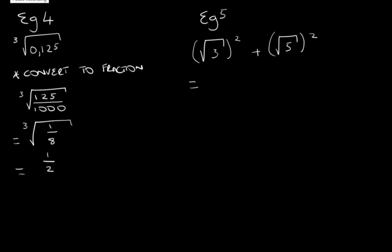Let's look at our fifth example. We have the square root of 3 squared plus the square root of 5 squared. What's important to note is that when we square a square root, the two will cancel each other. In other words, the square will cancel the square root.